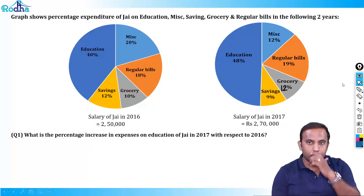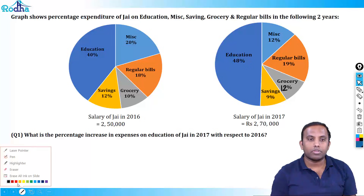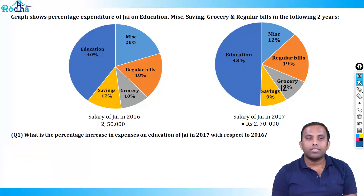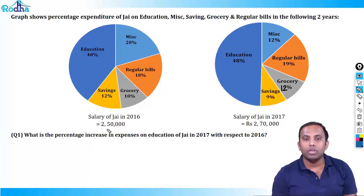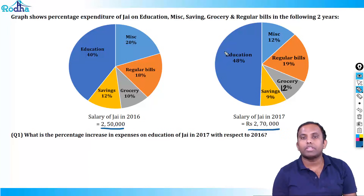Let's go to the first question: what is the percentage increase in expenses on education of J in 2017 with respect to 2016? First, we see by how much this pie chart has changed with respect to the other. This pie chart is of 2,50,000 value and this pie chart is of 2,70,000 value.